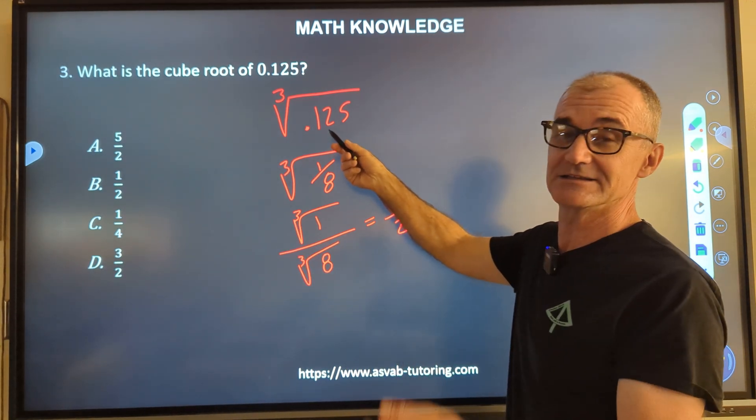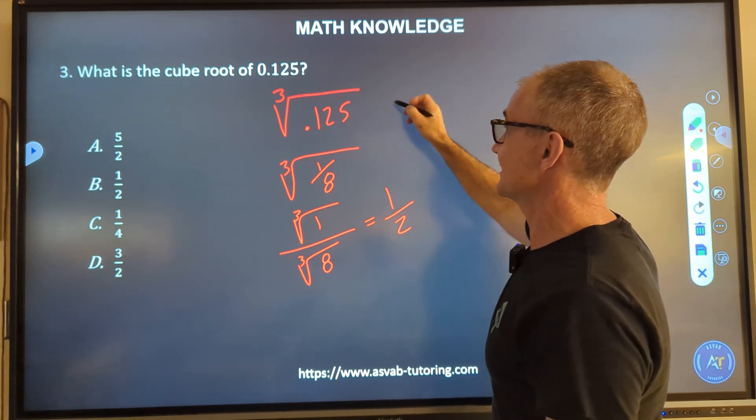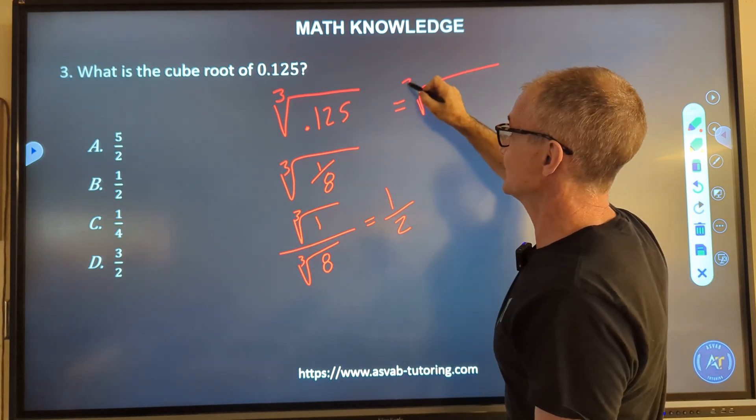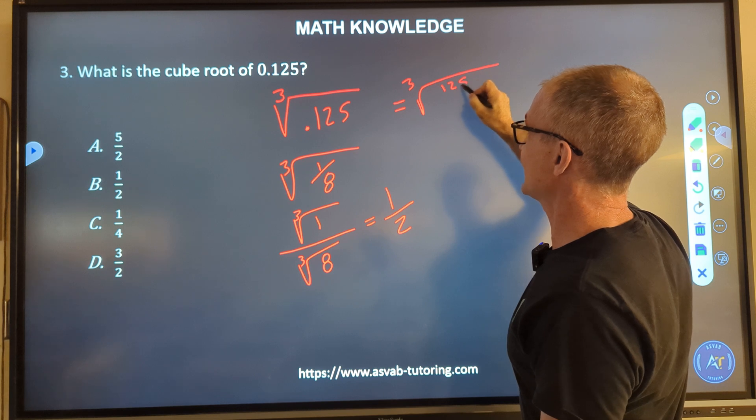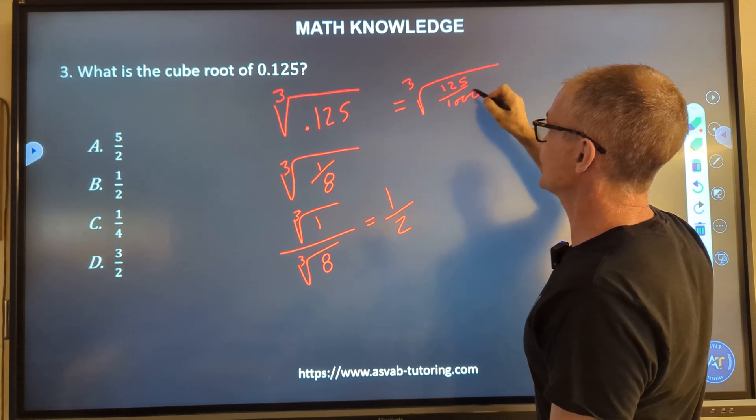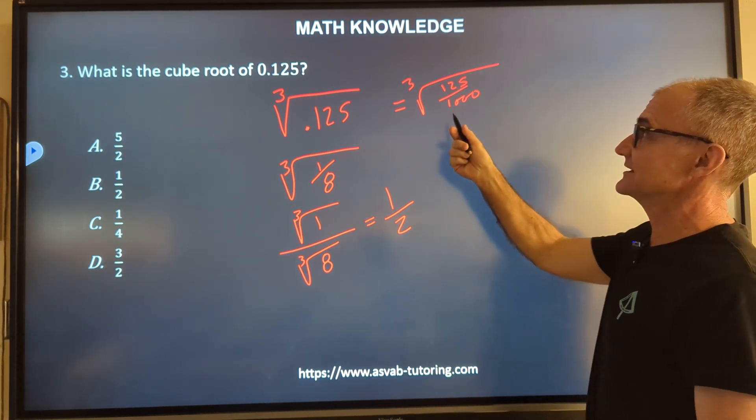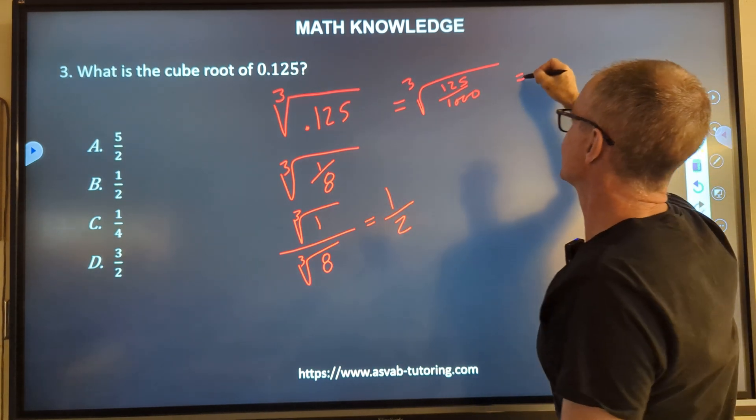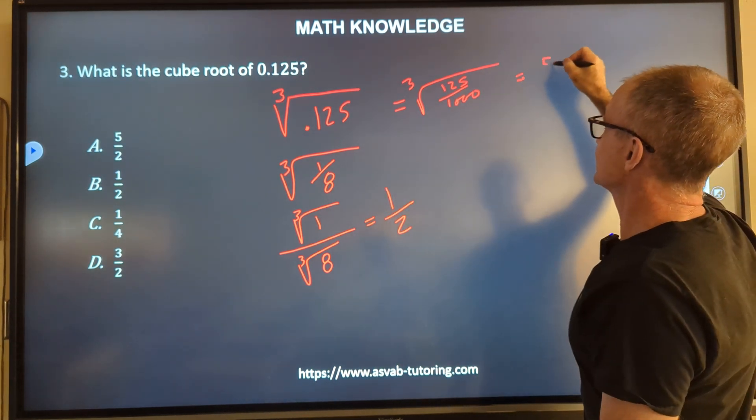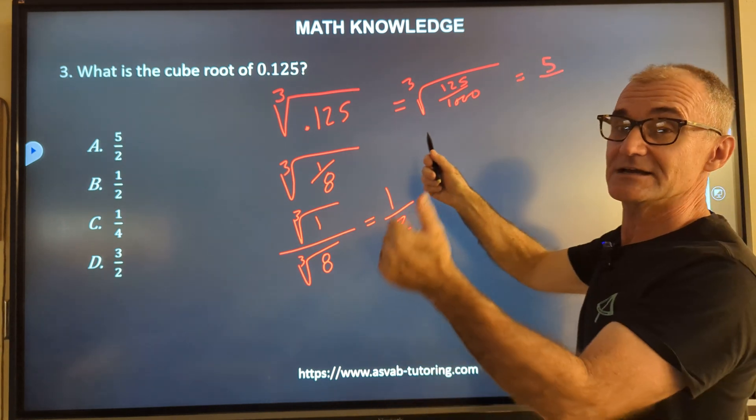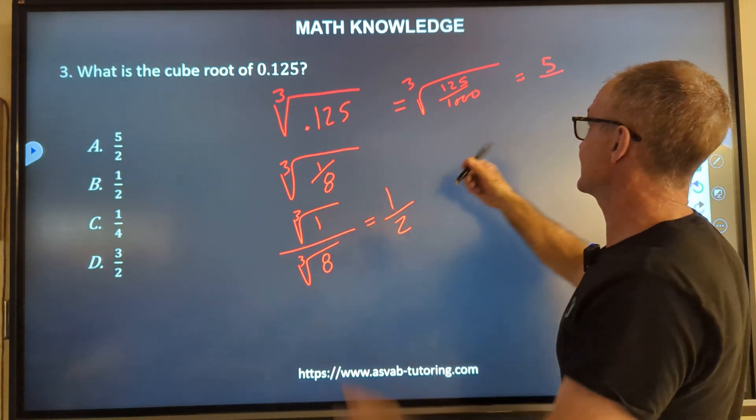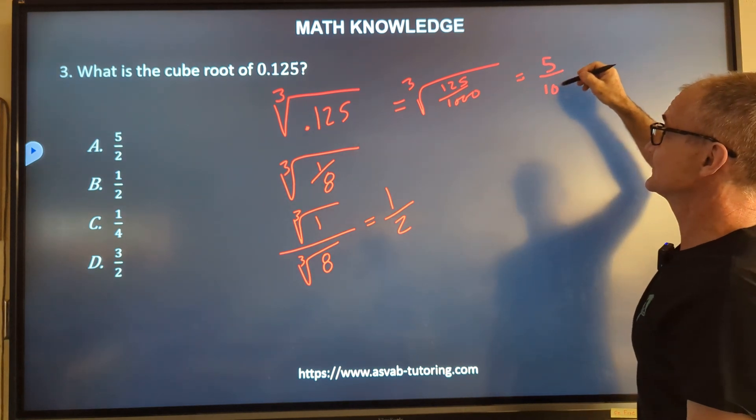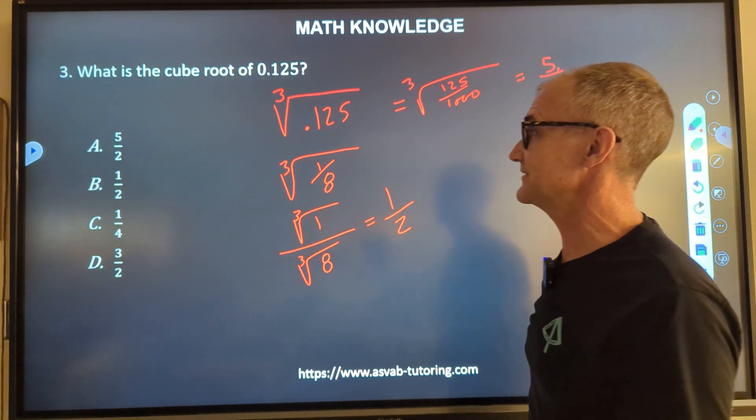If you're not able to see that as one eighth, you could also try it as the cube root of a hundred and twenty-five over a thousand. And then as you see it like that, five times five times five, one twenty-five. And then ten times ten, a hundred times ten, a thousand, you get five tenths. And then that would reduce to a half.